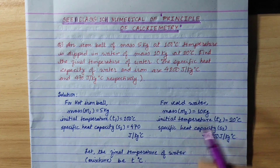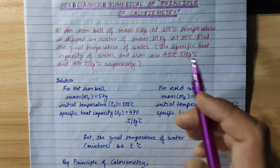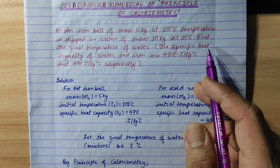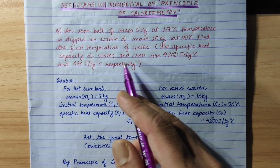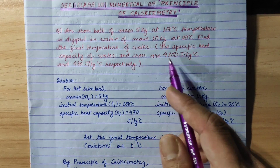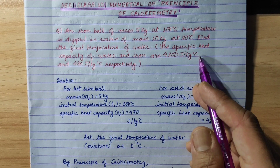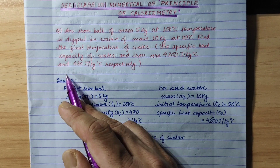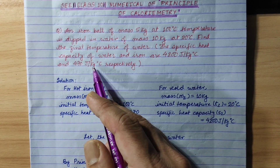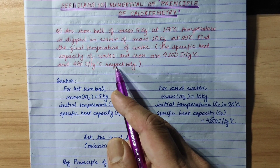We have extra given data. The specific heat capacity of water and iron are 4200 joules per kg per degree Celsius and 470 joules per kg per degree Celsius respectively.